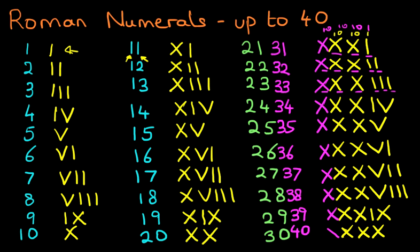And forty is four X's. We've got ten, twenty, thirty, forty. And it really is as simple as that. Learn the numbers from one to ten, and if you're doing numbers up to forty, just keep adding the X before the number.